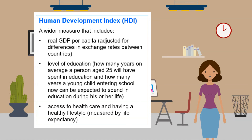The Human Development Index, or HDI, is a wider measure that includes: real GDP per capita adjusted for differences in exchange rates between countries; level of education — measured by how many years on average a person aged 25 will have spent in education, and how many years a young child entering school can be expected to spend in education; and access to healthcare and having a healthy lifestyle, measured by life expectancy.